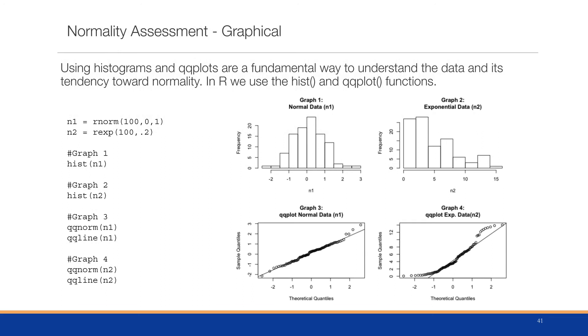Let's look at a graphical assessment. So here, what we've done is we've created two datasets in R using the rnorm. So the rnorm and rexp will produce a random set of data. In the first case, using a normal distribution, we're going to create 100 observations with a mean of 0 and a standard deviation of 1. In the second case, we are creating 100 observations using an exponential distribution with a lambda of 0.2. And this will go into our vector n1 and n2.